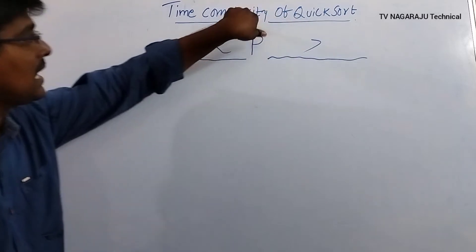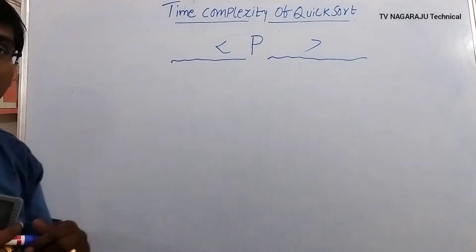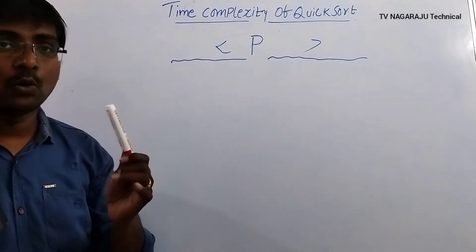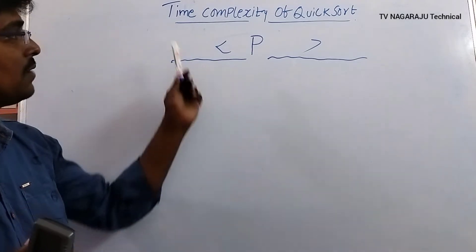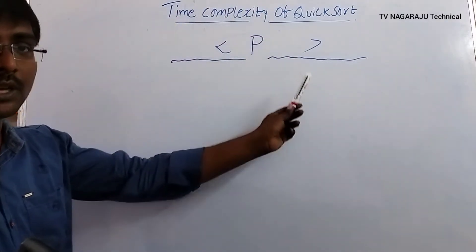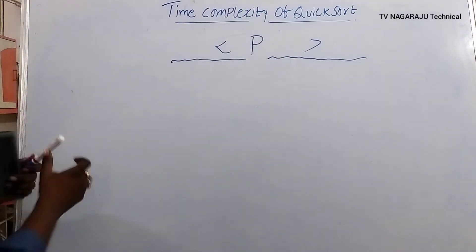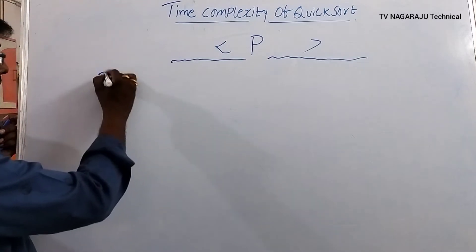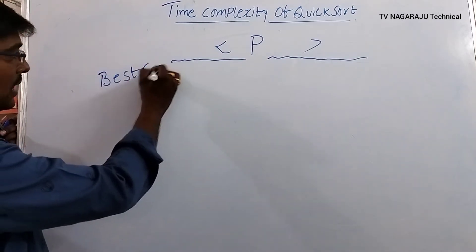Now, coming to the time complexity — the total amount of time taken for completion of a program is called time complexity. Here we will discuss two cases.